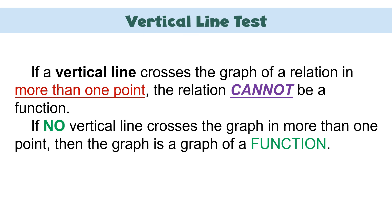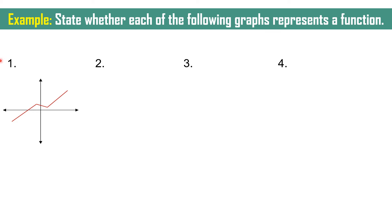Now, what is the use of the vertical line test in identifying a relation as a function? We use this test when the given relation is presented using a graph. If a vertical line crosses the graph in more than one point, the relation cannot be a function. If no vertical line crosses the graph in more than one point, then the graph is a function. In example 1, drawing a vertical line on the graph shows it only intersects at one point. Therefore, this graph is a function.